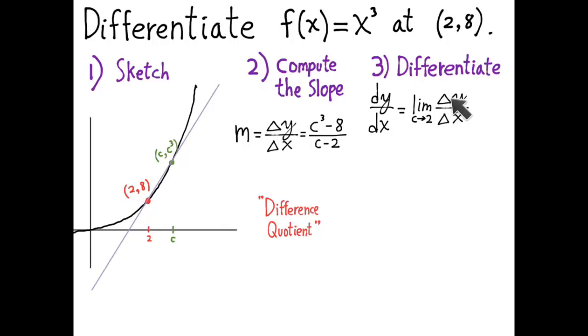It sort of means the same thing as delta y over delta x, but we replace the delta with a d to indicate that we have performed the limiting process.